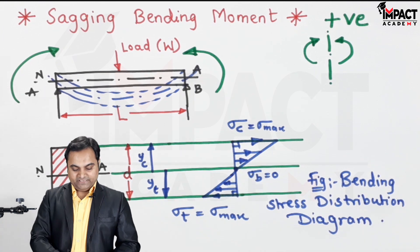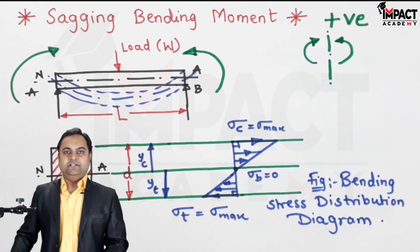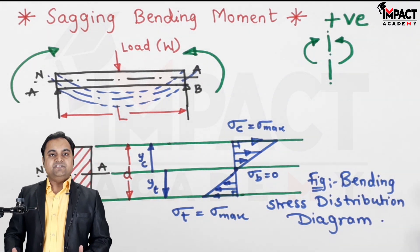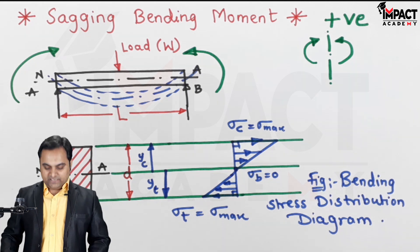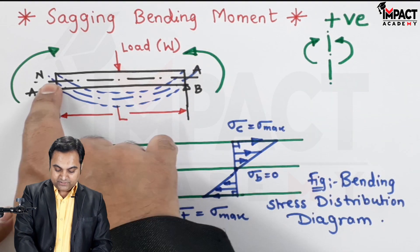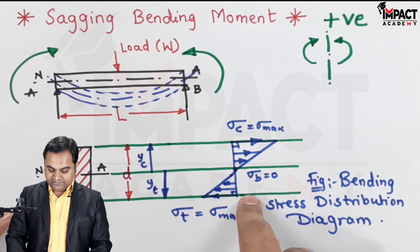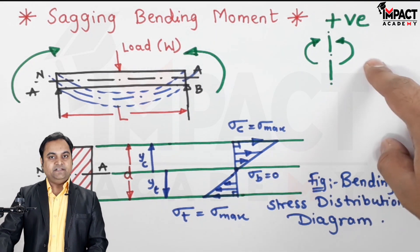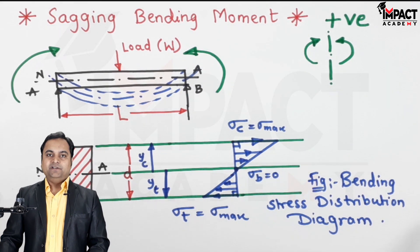For this sagging bending moment, we have seen whenever there is sagging bending moment, the beam bends in such a way that the layers above the neutral axis are getting compressed, whereas at the below they are in tension, along with the sign convention and the stress distribution diagram.